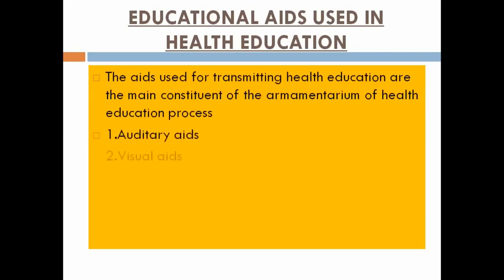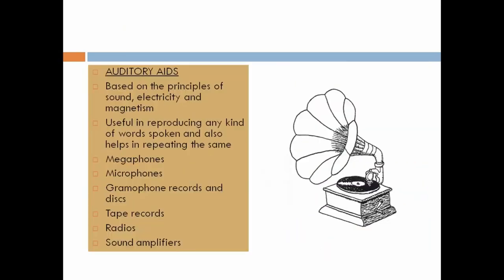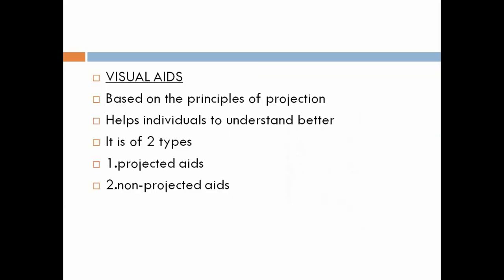The first aid type is auditory aids, the next is visual aids, and the combination of audio-visual aids. This topic is very old because this content is taken from old textbooks, that's why megaphones, microphones, and gramophones are listed here. Auditory aids are things we can only listen to — radios, FM stations, tape recorders, and sound amplifiers are mentioned under auditory aids.